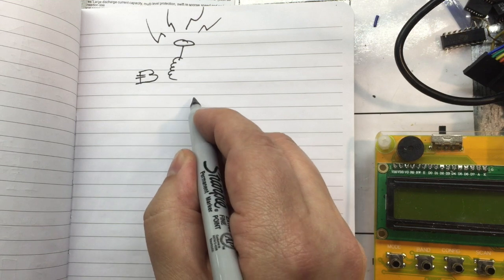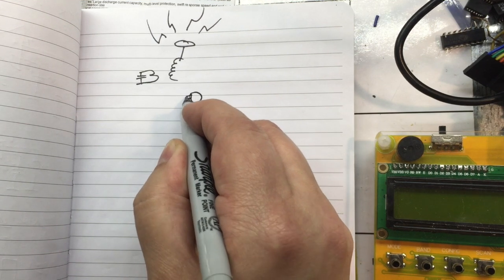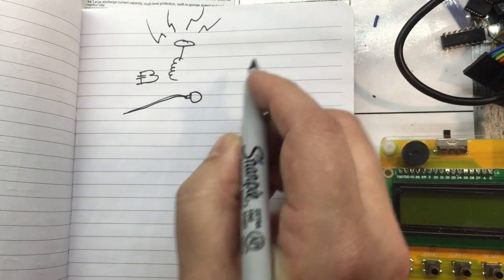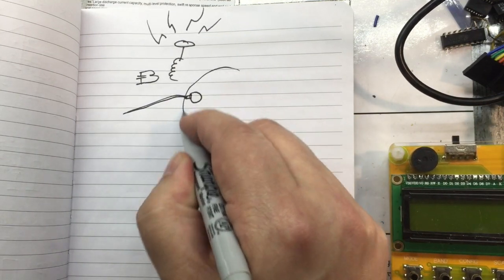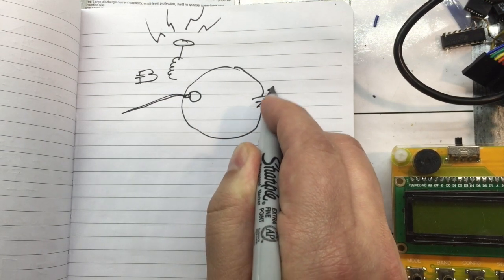Now on a mag loop antenna, the primary is one turn. It's fed through a feed line, shielded cable, and the secondary is also one turn larger, and it has a variable capacitor.